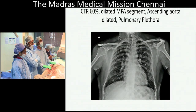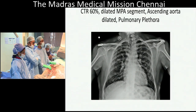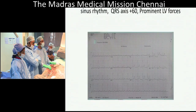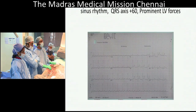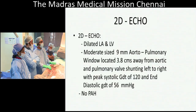His chest X-ray showed a cardiothoracic ratio of 60%, dilated MPA segment, dilated ascending aorta, and pulmonary plethora. On ECG it was found that he has sinus rhythm, QRS axis of plus 60, and prominent LV forces with Q waves in V5 and V6.